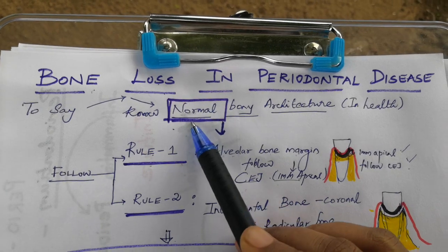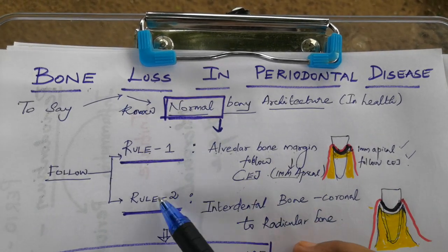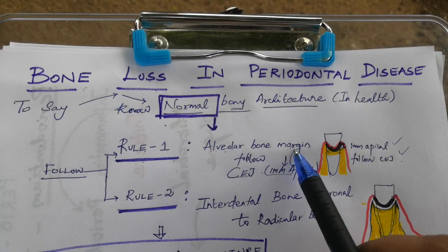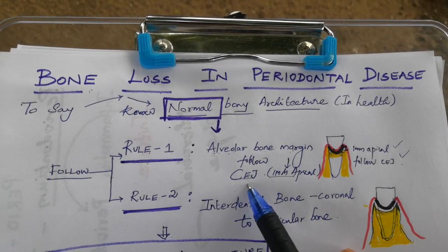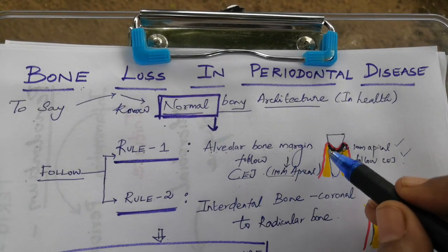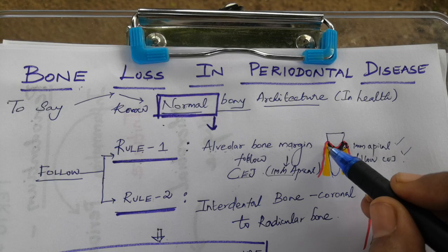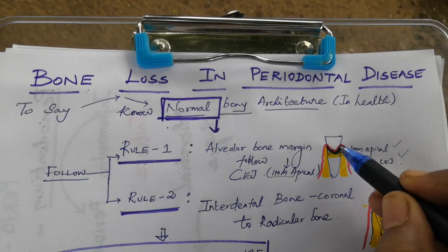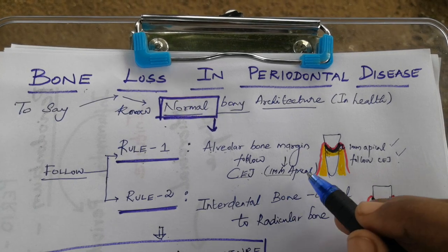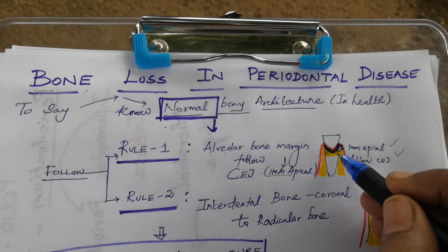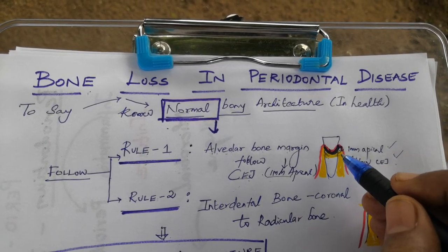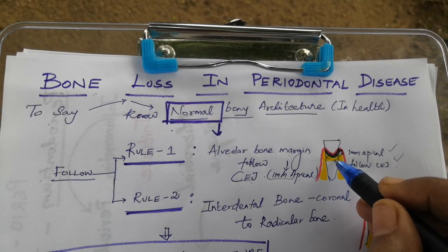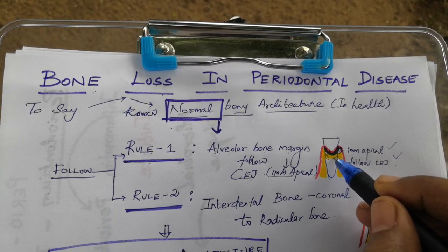The normal bony architecture has to follow two rules. The first rule is that the alveolar bone margin has to follow the CEJ outline. In addition, it has to be 1 mm apical to the CEJ — the bone should sit 1 mm below the CEJ.